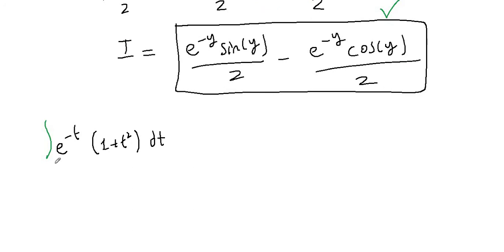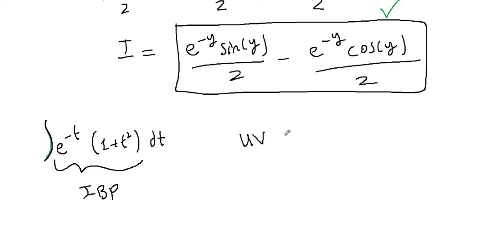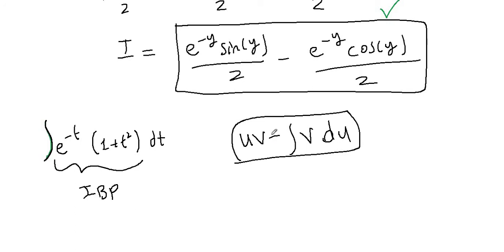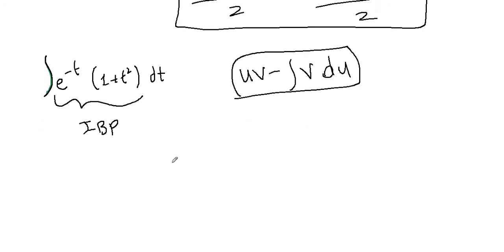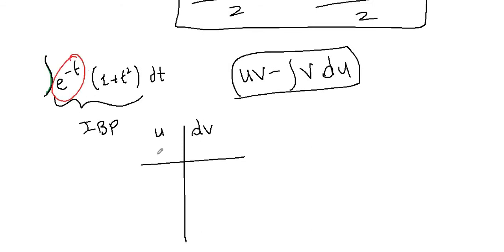This is again integration by parts. It is very useful to practice integration by parts in all cases — circular cases and the tabular method. I have a detailed video about it. This time I am not going to apply u times v minus integral of v du. Instead, I will apply the practical tabular method. In the tabular method, we make a t-chart and pick u and dv.